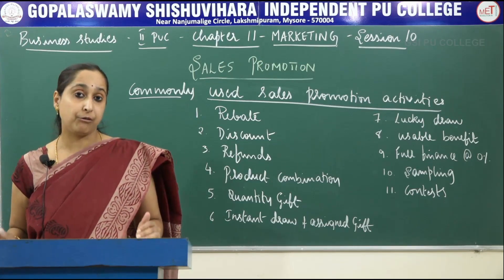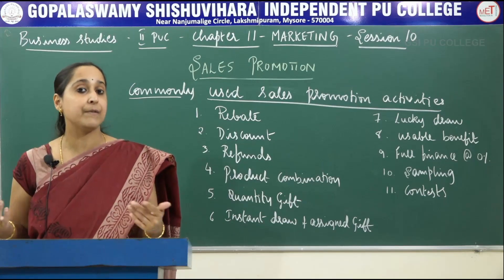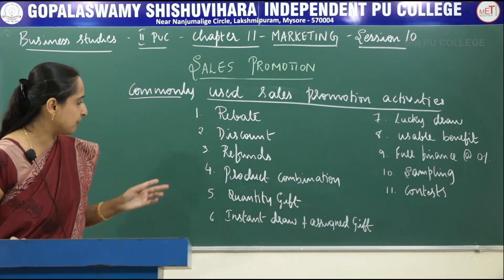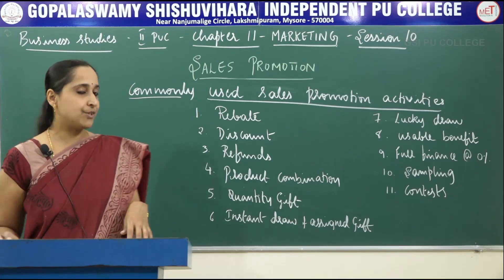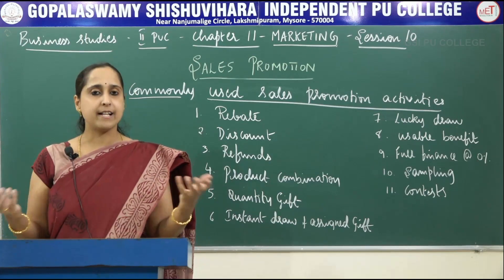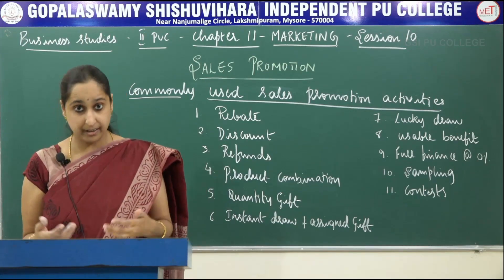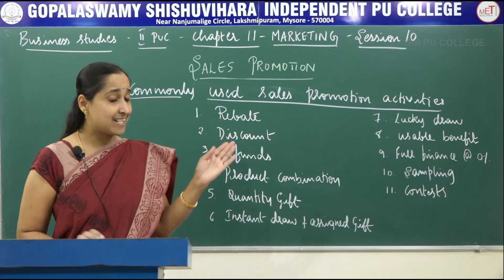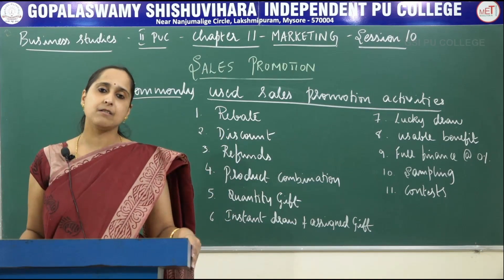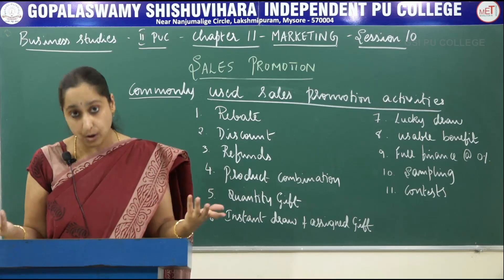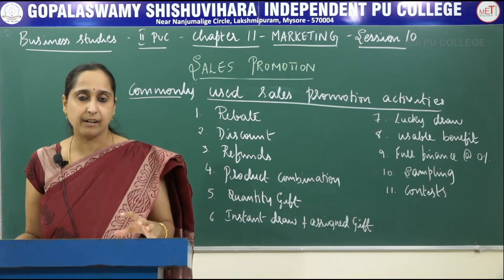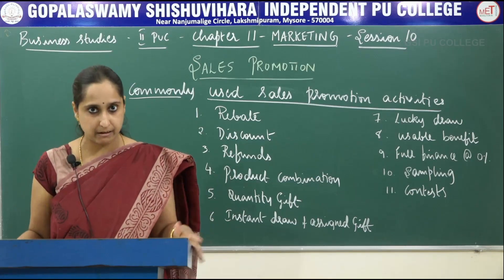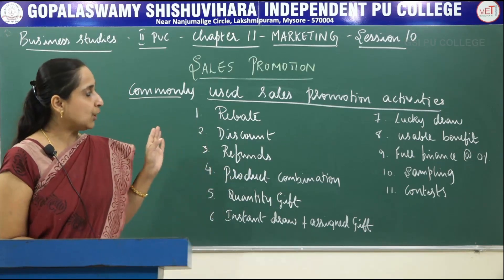Next is quantity gift — offering extra quantity of a product. For example, in a shaving cream they may offer 40 percent extra, or in a toothpaste 25 percent extra, or a buy-two-get-one-free offer for a T-shirt. Next is instant draw and assigned gift — if you scratch a card you may get a car, computer, or cycle. Next is lucky draw — in a bathing soap you may get a gold coin, or a coupon for free petrol.